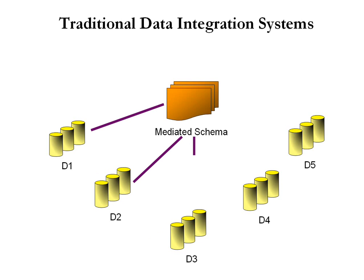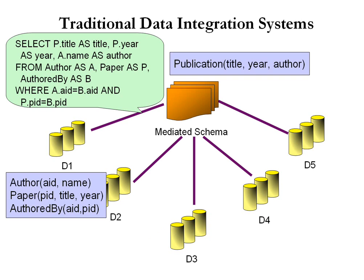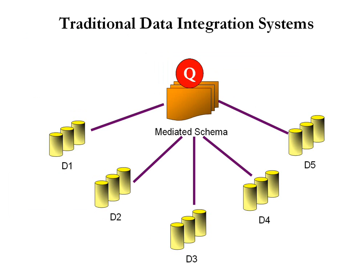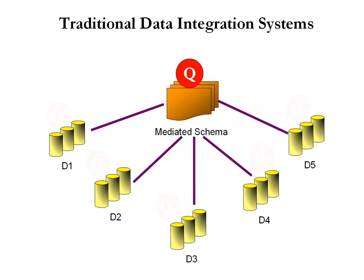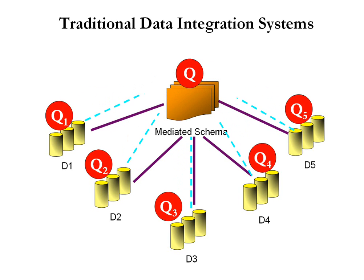Traditional data integration systems are based on building schema mappings between the source schemas and a metadata schema. As a simple example, a schema mapping can specify that the publication table in the metadata schema can be obtained by joining the three tables in the source. The user composes the query according to the metadata schema, and the system reformulates the query according to the schema mappings and answers the reformulated queries on the source data.